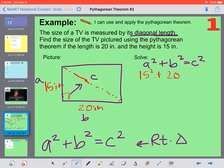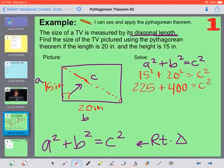b is 20, so 20 squared. We need to find c. So 15 to the power of 2 is 225. 20 times 20 is going to give us 400. So 400 plus 225 is 625.